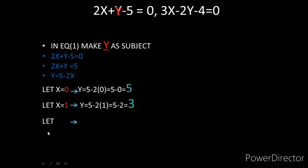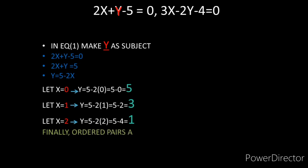For the third value, let x = 2: y = 5 - 2(2) = 5 - 4 = 1. So the three ordered pairs for equation 1 are: (0, 5), (1, 3), and (2, 1).